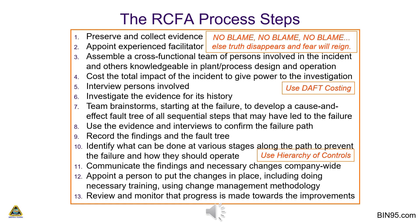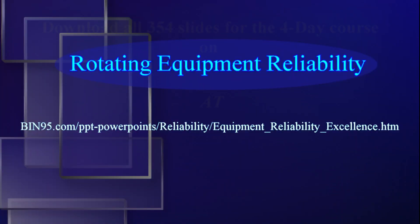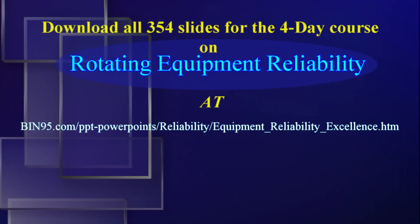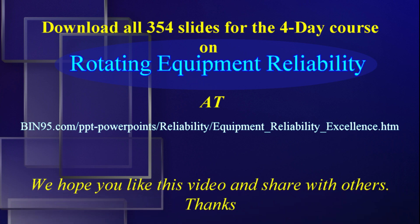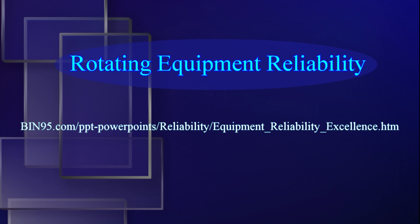Steps 10 through 13: (10) identify what can be done at various stages along the failure path to prevent it and how operations should be managed; (11) communicate the findings and necessary changes company-wide; (12) appoint a person to put the changes in place, including doing necessary training using change management methodology; (13) review and monitor that progress is made towards the necessary improvements.